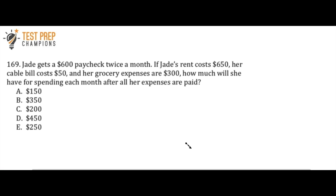Jade gets a $600 paycheck twice a month. If Jade's rent costs $650, her cable bill costs $50, and her grocery expenses are $300, how much will she have for spending each month after all her expenses are paid? And don't worry about any kind of taxes or anything like that. Just assume that this is what she gets to keep twice a month. So now is your chance to pause the video, try to figure this out, and whenever you're ready, we'll go over the answer.